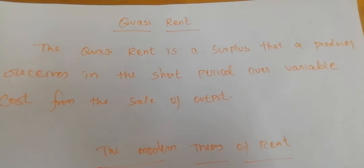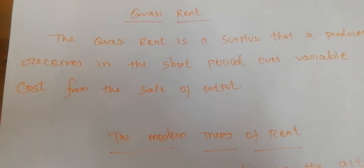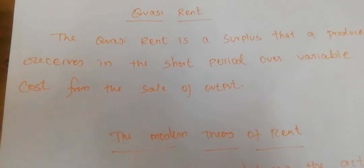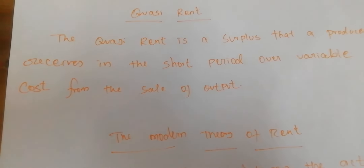Today we study the next concept: quasi rent. Quasi rent is a surplus that the producer receives in the short period over variable cost from the sale of output. Marshall introduced the concept of quasi rent. Factors other than land — such as planned machinery — are in fixed supply during the short period.